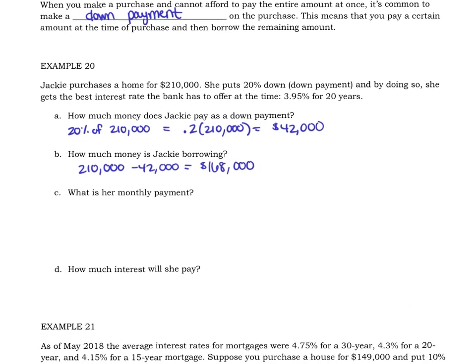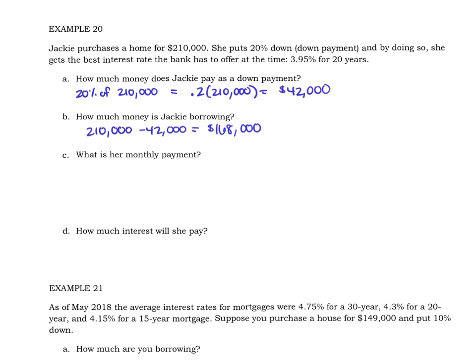Now for her monthly payment, this is based off of only borrowing the $168,000. She doesn't need to borrow the full $210,000 because she already paid some of that money up front. So this amount — that $168,000 — is the principal on her loan. That's what she's going to borrow.